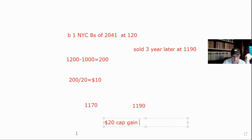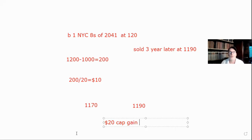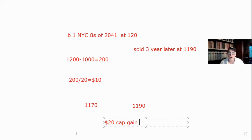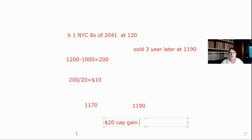Remember: accretion is on discounts, amortization is on premiums. You'll likely get one or two questions on this — it's not heavily tested, and it won't be harder than what we covered here. The questions will ask for cost basis, capital gain, or whether you're required to accrete or amortize. Key rules: OID zero coupon — must accrete. Secondary market discount — don't have to. Muni premiums — must amortize. Corporates and treasuries — don't have to. Thanks, and please like, subscribe, and share!